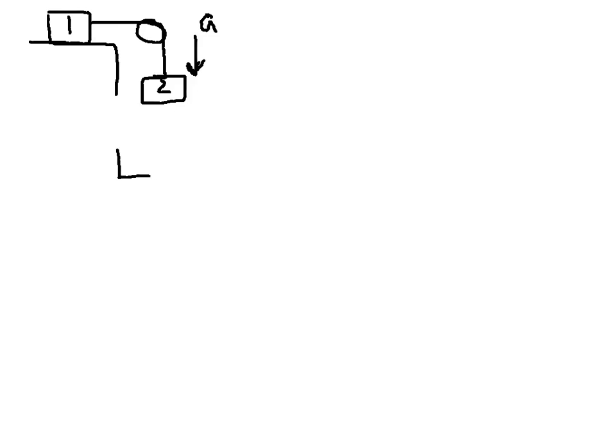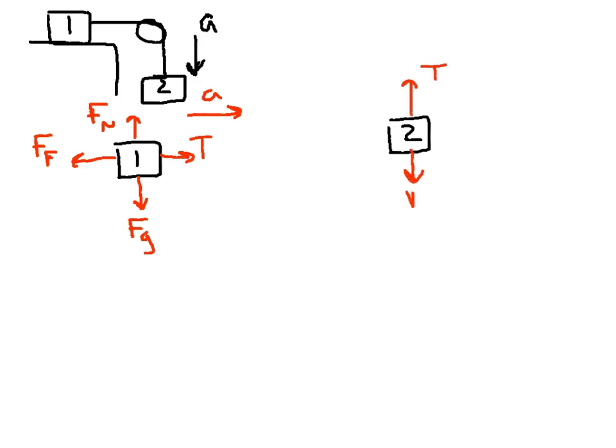For multiple objects you have to draw multiple free body diagrams. Here we have two objects so we're going to have two free body diagrams. So let's start with object 1. You have the force of gravity going down. You have the normal force going up because it's on a surface. You have friction acting backwards here. And we're going to have tension acting to the right because that's the direction the rope goes. And our acceleration is also going to be to the right. On box 2 we have tension acting up, force of gravity acting down, and our acceleration is also down.